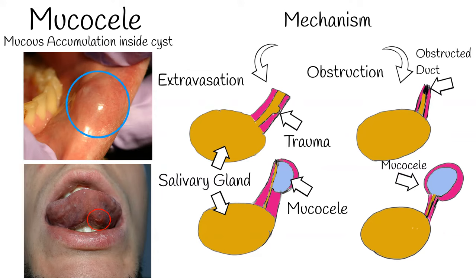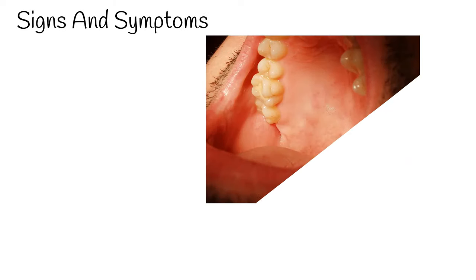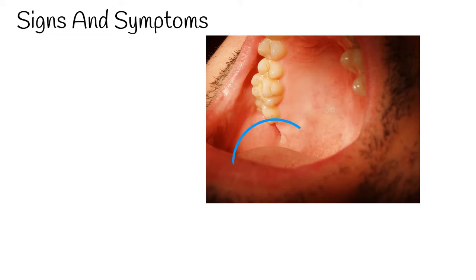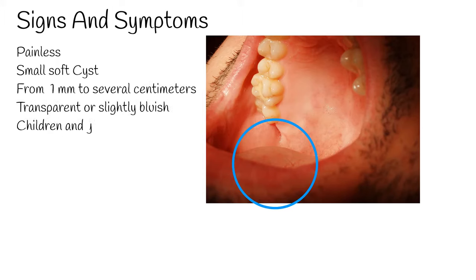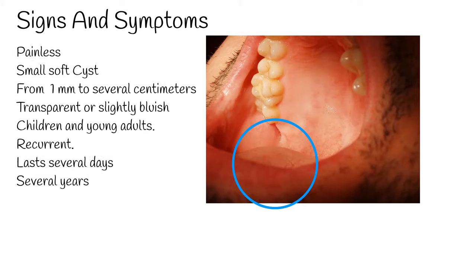Signs and symptoms: mucoceles are typically painless, and they are usually small and soft. However, the size can vary from 1 mm to several centimeters. Commonly they appear transparent or slightly bluish. They are more common among children and young adults. Mucoceles can be recurrent and can last several days, sometimes even several years.